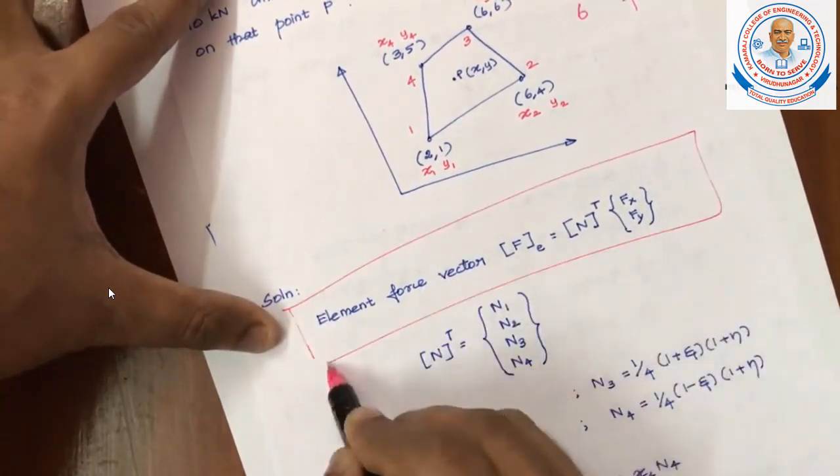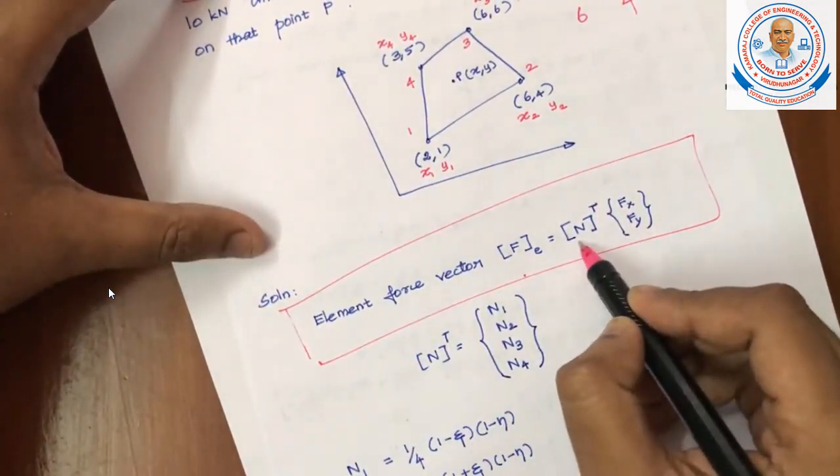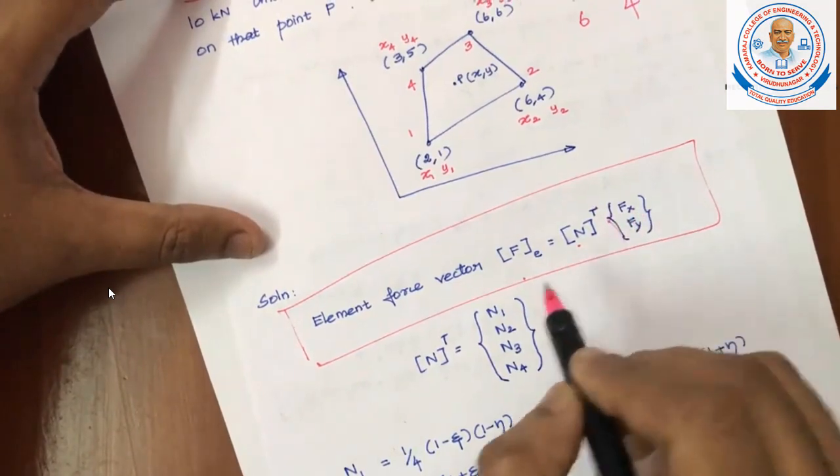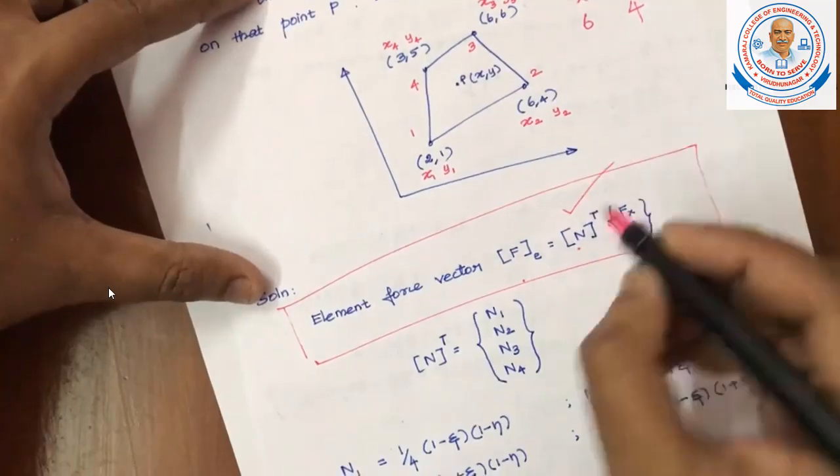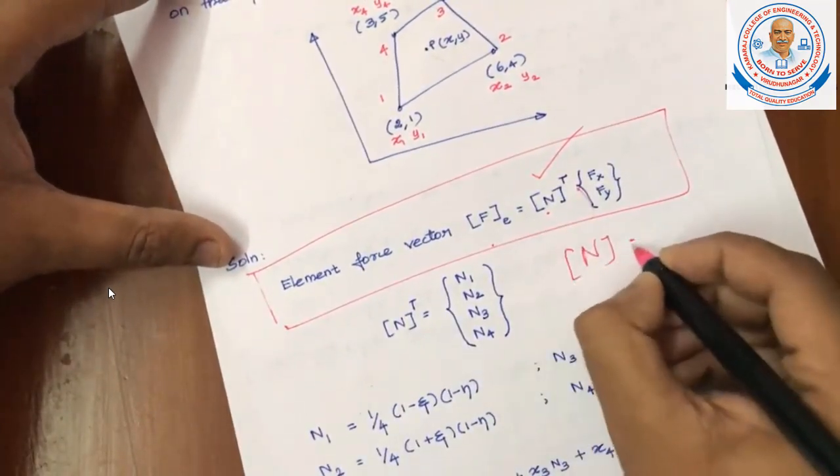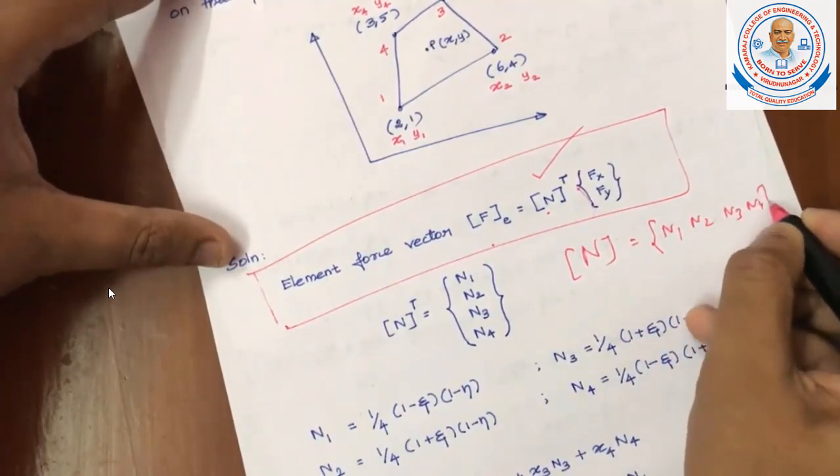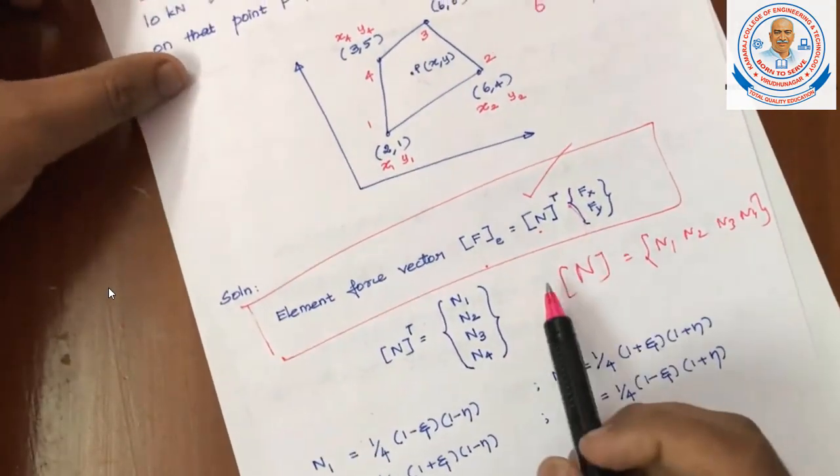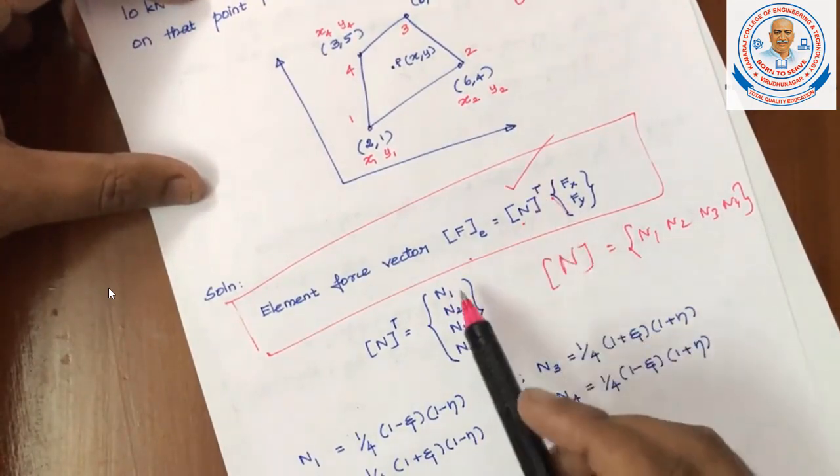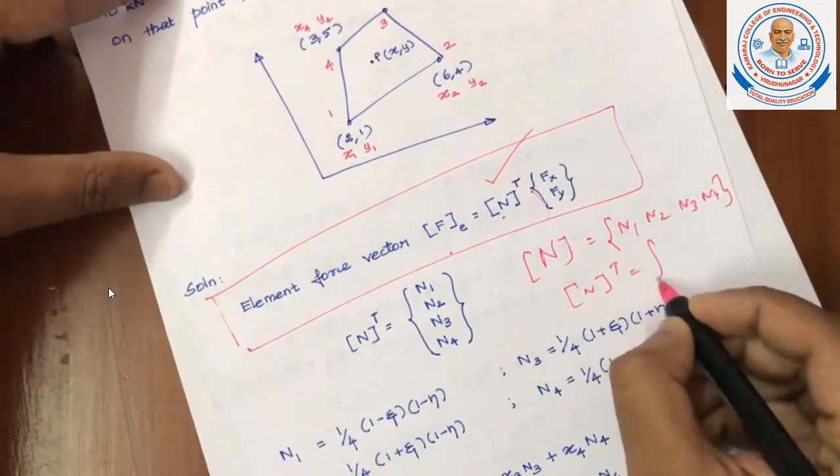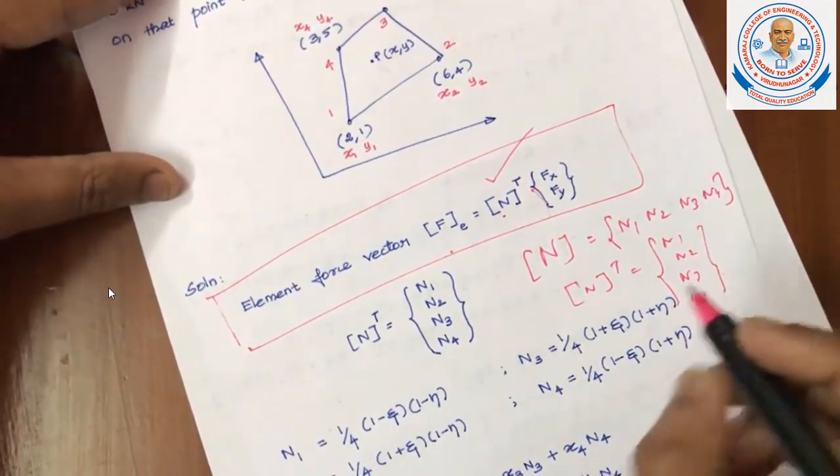The equivalent force vector formula is Fp equal to N transpose into F of X and Y. N transpose, what is N? N is nothing but a shape function. For this isoparametric coordinates, N1, N2, N3, N4, all shape functions are given. N transpose is the row matrix converted to a column matrix. If the row matrix is converted to a column matrix, N transpose will be one column matrix: N1, N2, N3, and N4.